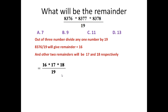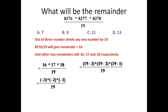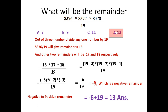Now let us use again the positive and negative remainder technique. In place of 16, we can write 19 minus 3. In place of 17, we can write 19 minus 2. In place of 18, we can write 19 minus 1, divided by 19. When these numbers are divided by 19, they will leave remainders minus 3, minus 2, and minus 1 respectively. If we simplify it, we get minus 6 upon 19 — meaning the remainder is minus 6, which is a negative number. But as I told you at the beginning, this negative remainder must be converted to a positive remainder. We do so by adding 19: minus 6 plus 19 equals 13, which is the answer. So when you divide all these numbers by 19, the remainder will be 13.